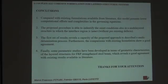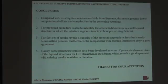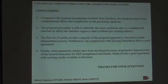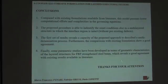To conclude, we can say that, compared with the existing formulations available from literature, this model presents lower computational effort and complexities in the governing equations. The proposed procedure is able to identify the onset condition also in a multilayer structure in which the interface region is intact. The first set of results reveals the capacity of the proposed approach to describe the multilamination process. Furthermore, the comparison with existing formulation shows a good agreement. Finally, some parametric studies have been developed in terms of geometric characteristics of the layered structure for FRP-strip thickness and steel adhesive layer, which reveals a good agreement with existing results available from literature. Thanks for your attention.